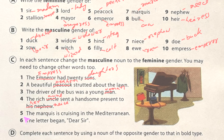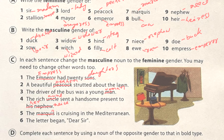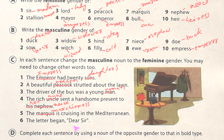Number five: 'The marquis is cruising in the Mediterranean.' Marquis is masculine, so we change it to marchioness. Number six: 'The letter began Dear Sir.' We change sir to madam: 'The letter began Dear Madam.'